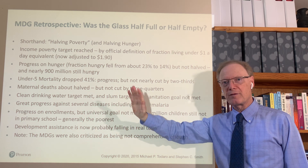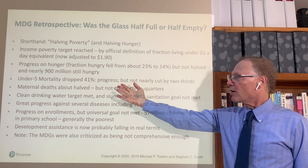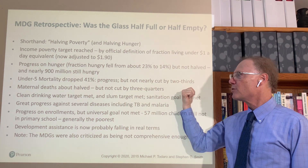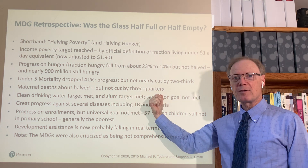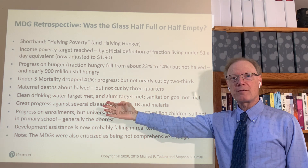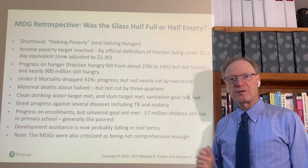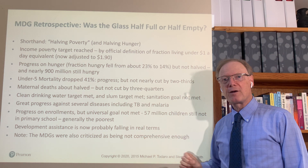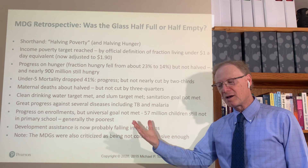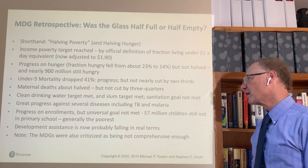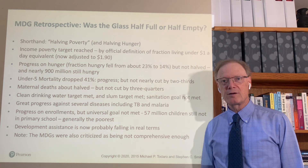Unfortunately, hunger seems to be ticking up again in the last year. In other areas, progress was made: under-five mortality dropped a lot but didn't come near the two-thirds cut targeted. Maternal deaths were cut in about half, but didn't come near the three-quarters cut. A drinking water target was met, but the sanitation target was not. There was great progress against diseases such as tuberculosis, and good progress on primary enrollments, but still 57 million children of primary school age were not even enrolled — generally among the poorest of the poor. And development assistance has been and is probably still falling in real terms.